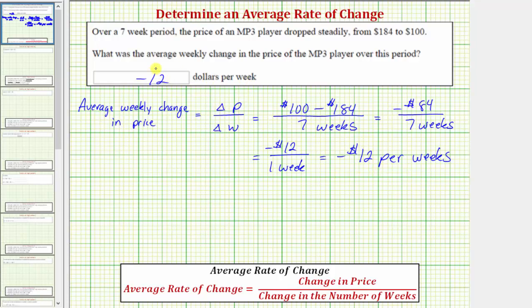It is important in this case we do include the negative, because the negative indicates, on average, the price is decreasing per week. It's also important to recognize, another way to express the same information would be to say, the average weekly price is decreasing by $12 per week.